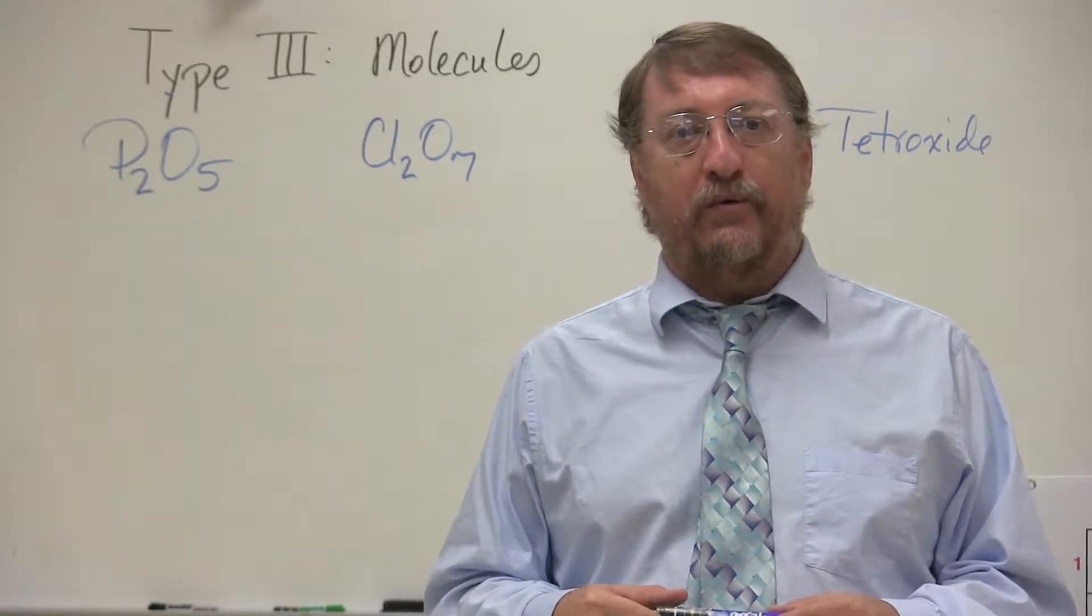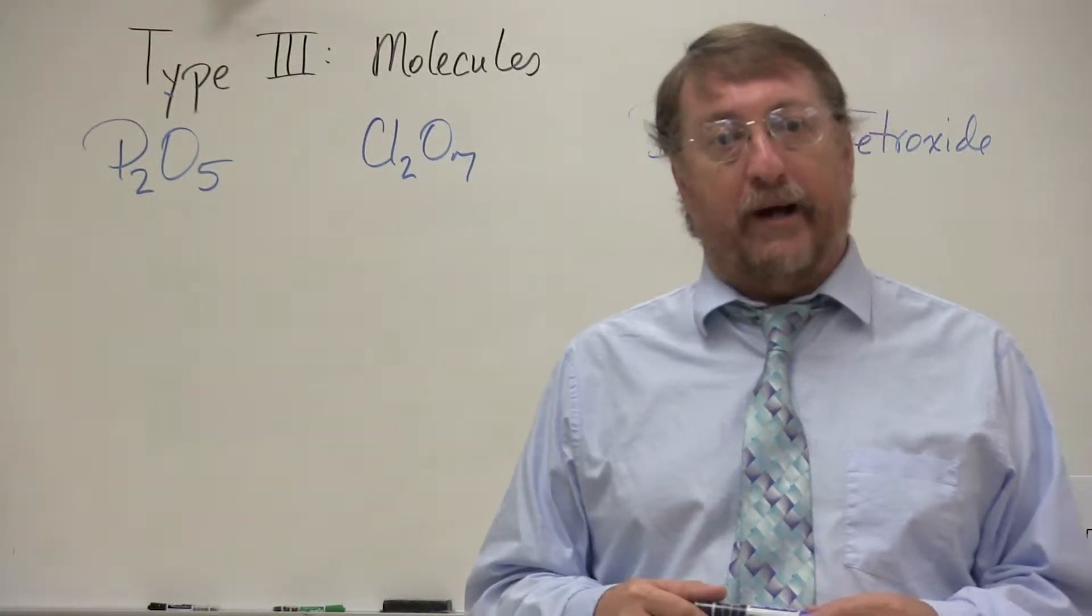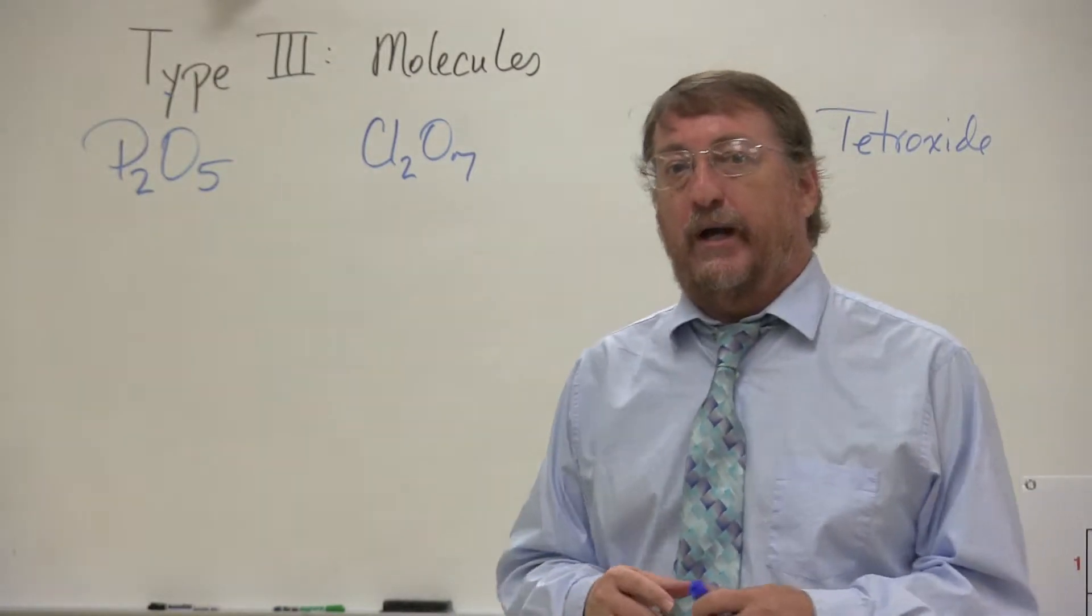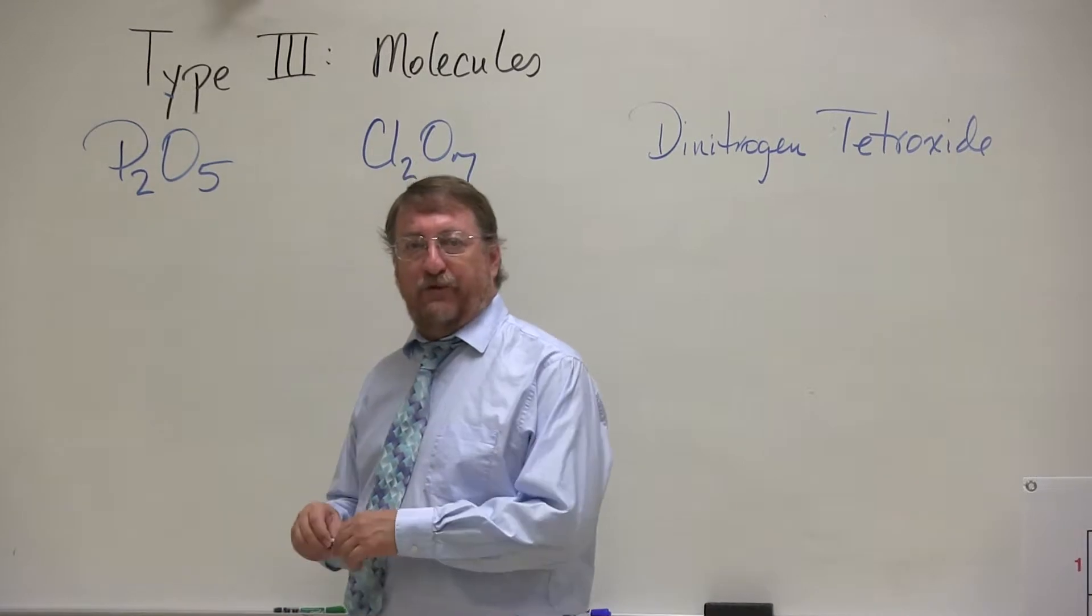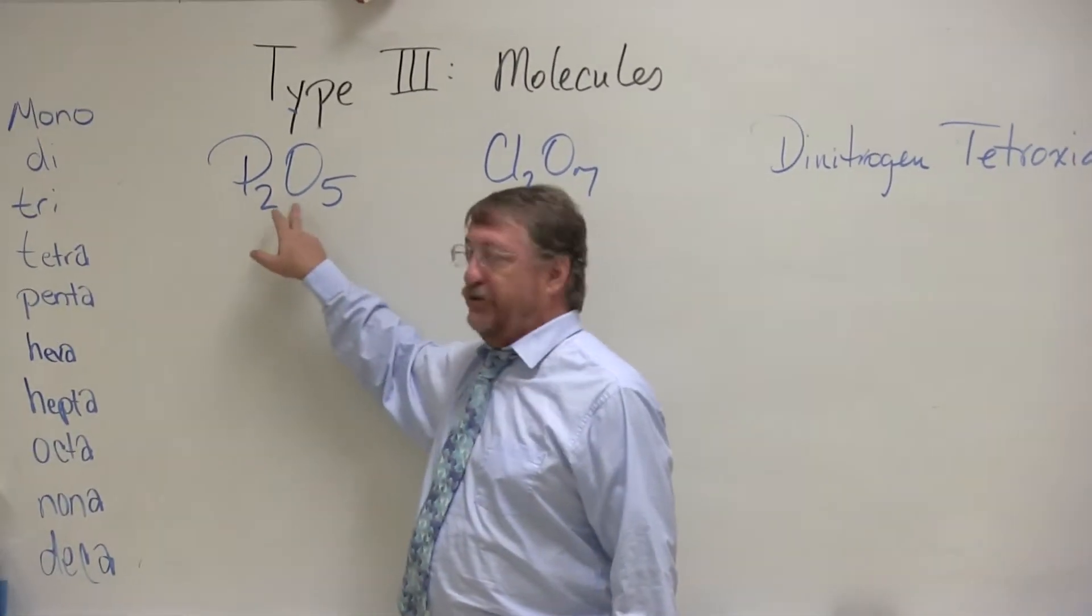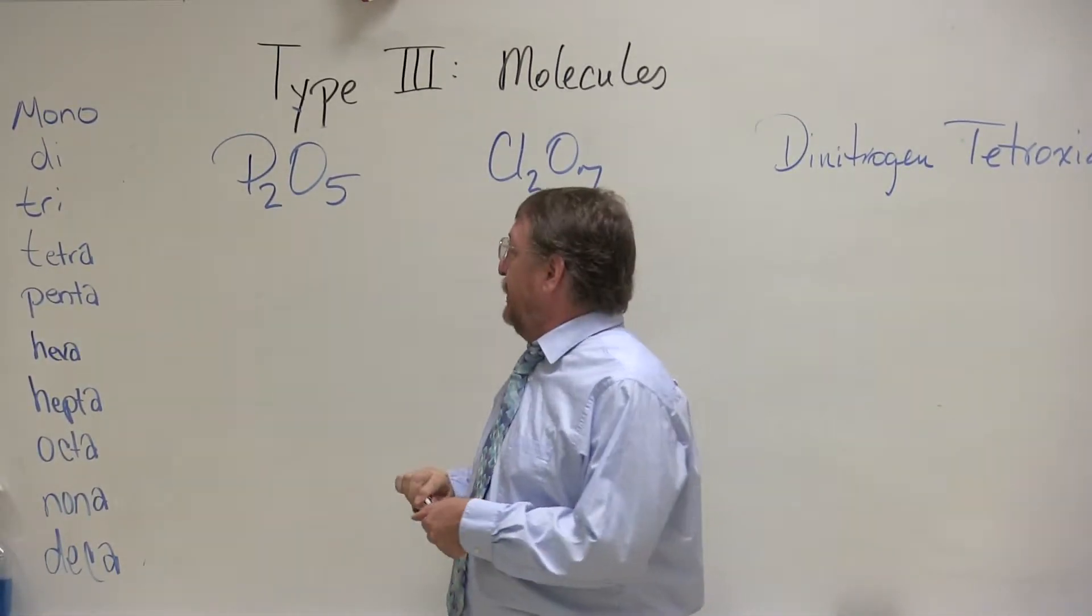This is unit 2, video number 12, type 3 practice. I'm just going to show you a few examples real quick here. We know we use prefixes if we involve two nonmetals. Phosphorus and oxygen are both nonmetals, so we're going to name this.